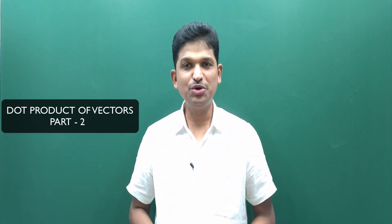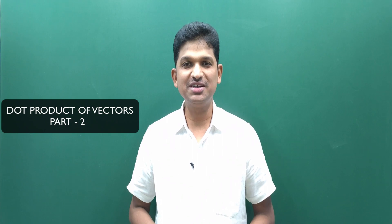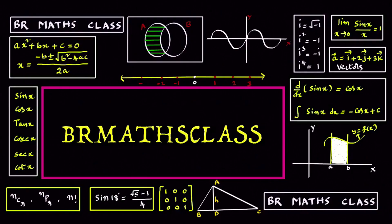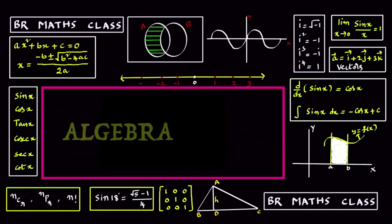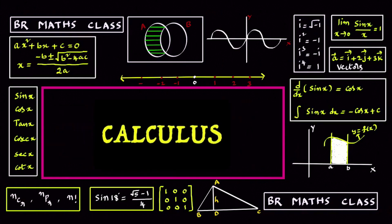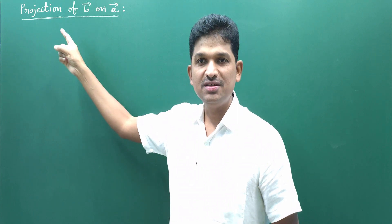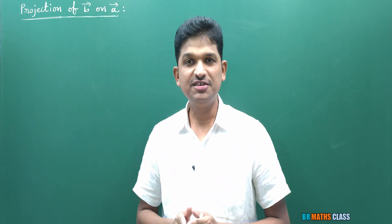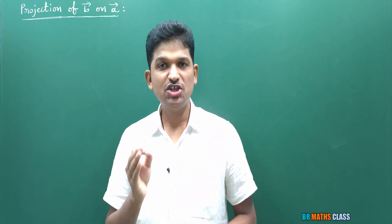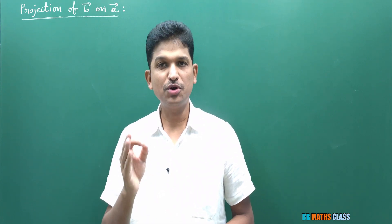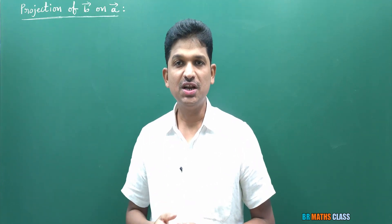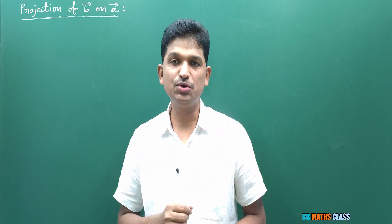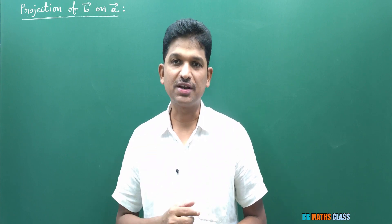Before starting this video, please drop a like. Without much delay, let's begin the class. Observe this: projection of vector B bar on A bar. In this concept, you will learn the geometrical meaning of dot product of vectors. After completion of this definition, I'll give you three important points. The last point will tell you the geometrical meaning of dot product of vectors.